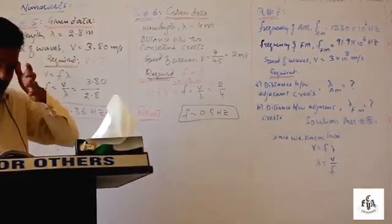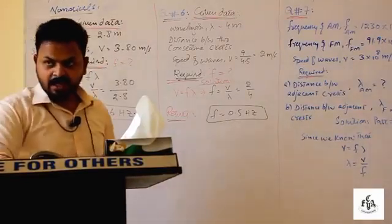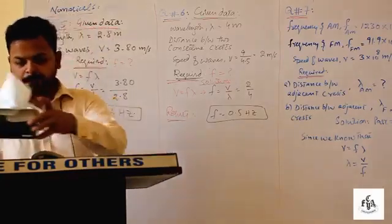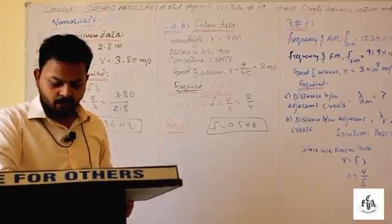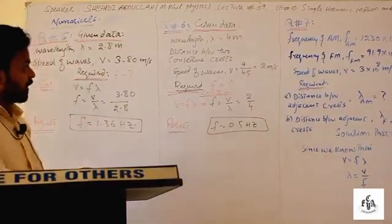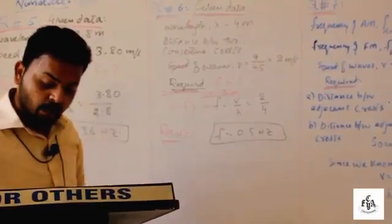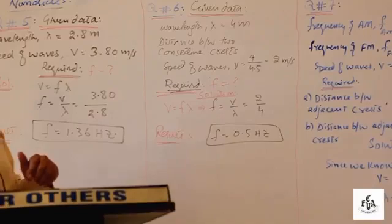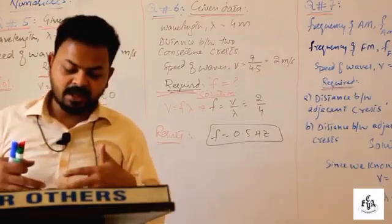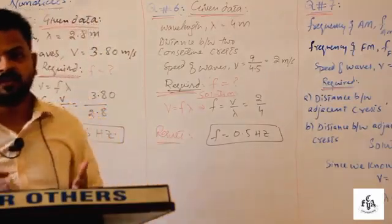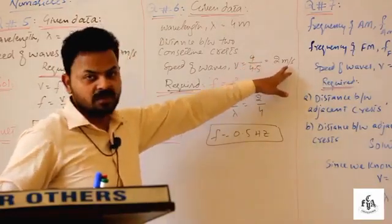Now starting with question number six. It says the distance between consecutive crests in a series of water waves is 4.0 meters, so wavelength λ = 4.0 m. The crests travel a distance of 9.0 meters in 4.5 seconds. We know speed = distance / time, so v = 9.0 / 4.5 = 2 meters per second.